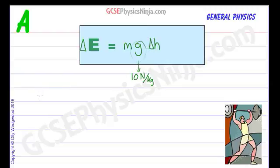So here, let's write out the quantities. So delta E is the change in gravitational potential energy, and the units of that, because it's energy, will be joules.